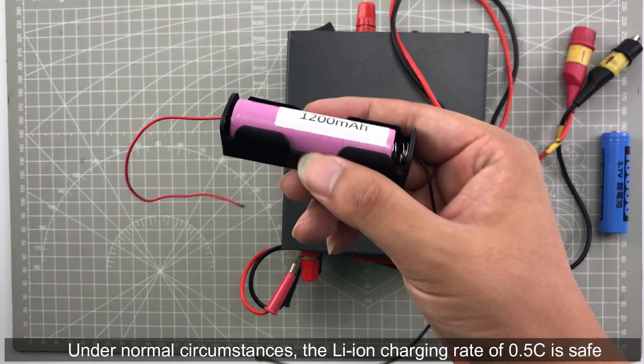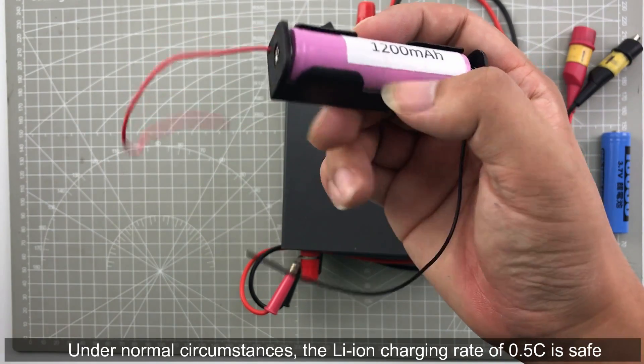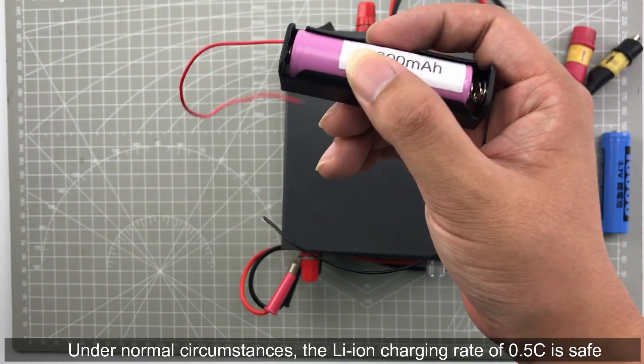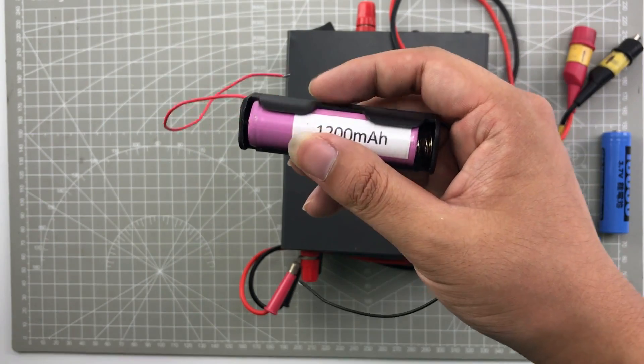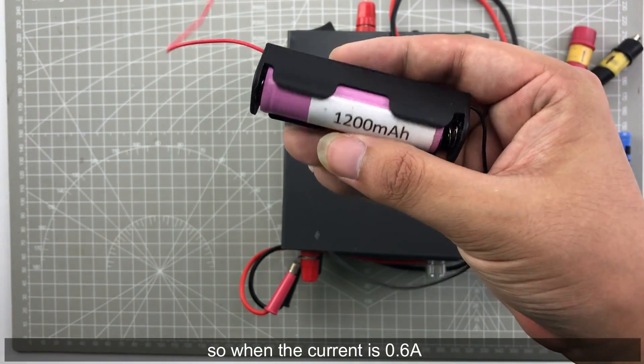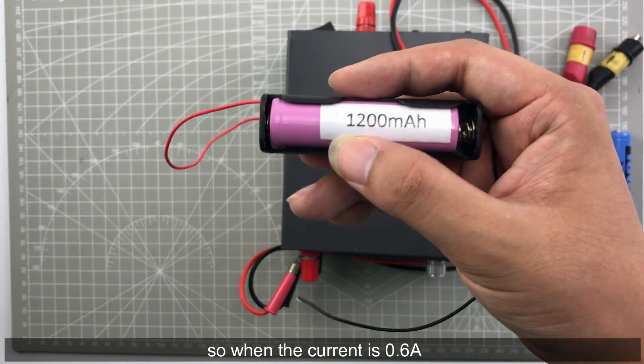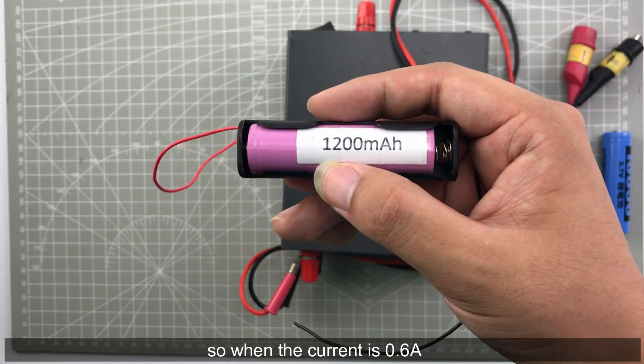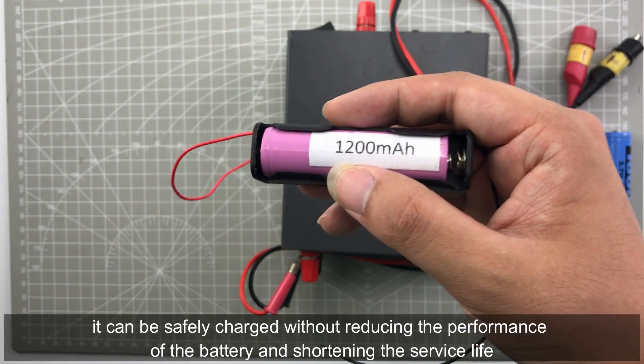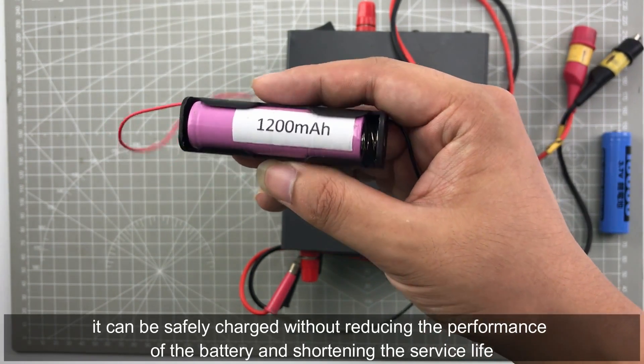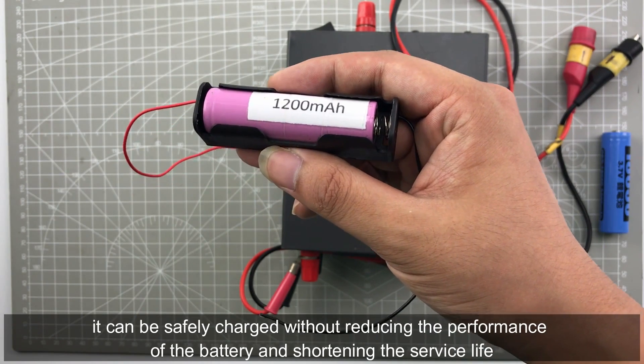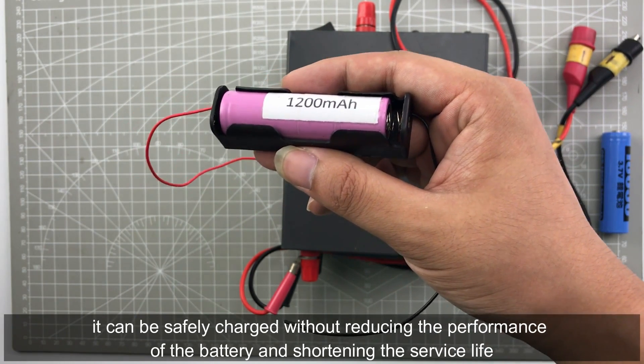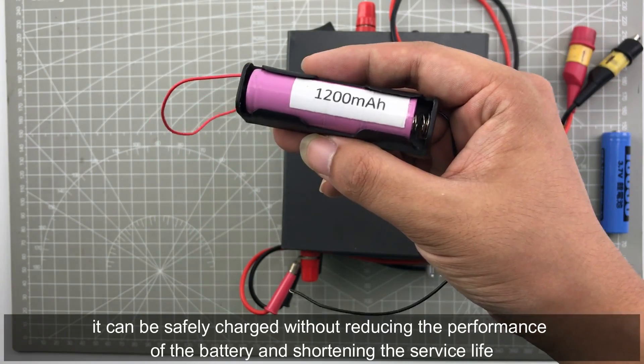Under normal circumstances, the lithium charging rate of 0.5C is safe. So when the charging current is 0.6A, it can be safely charged without reducing the performance of the battery and shortening the service life.